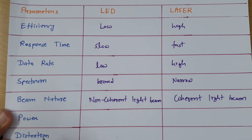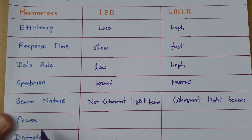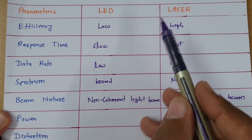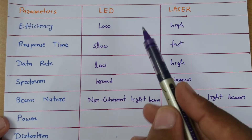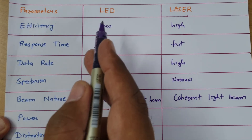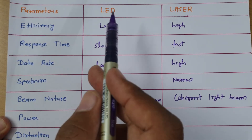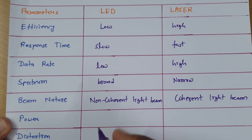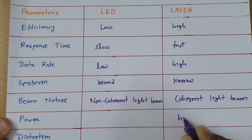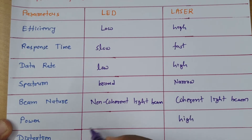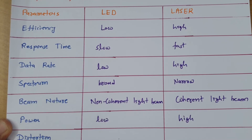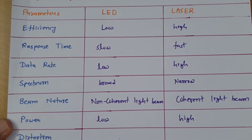When we talk about power — how much power is being transmitted — laser transmits higher power in terms of light compared to LED. So high power is transmitted by laser and low power by LED.